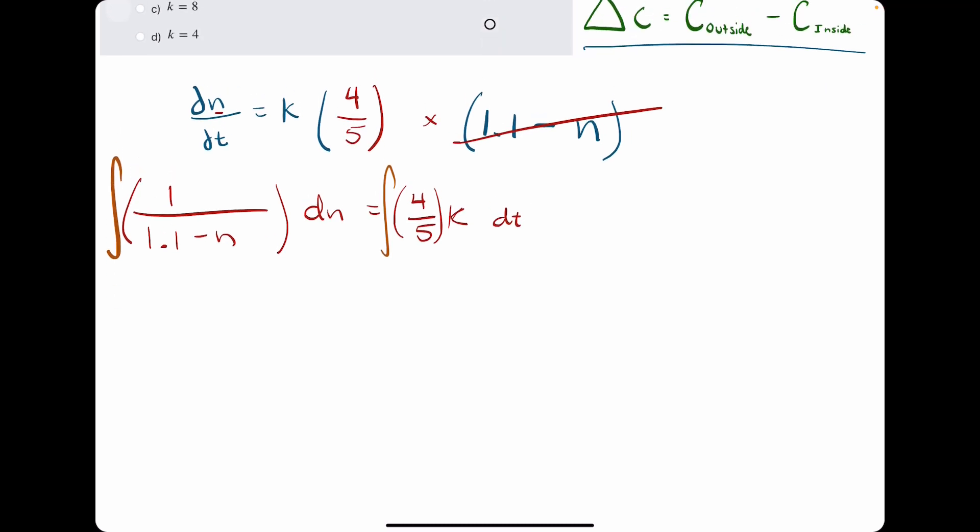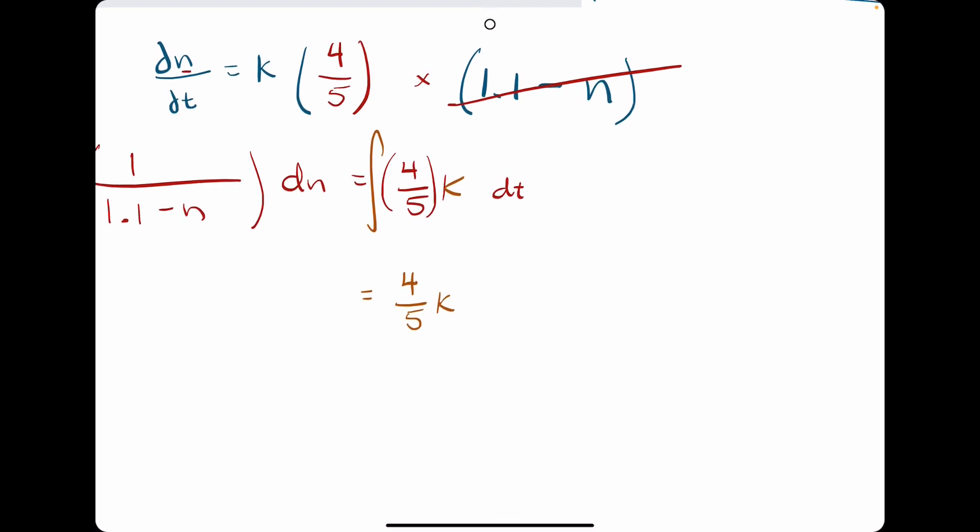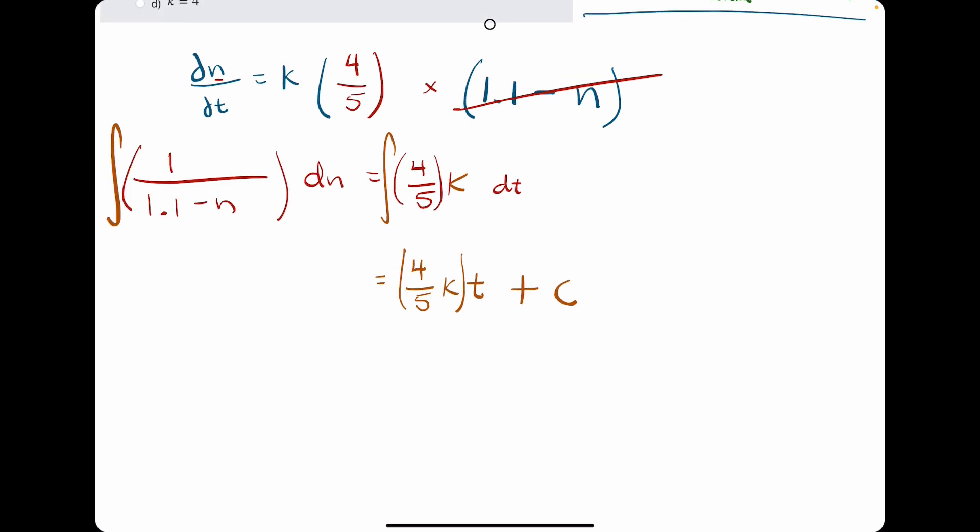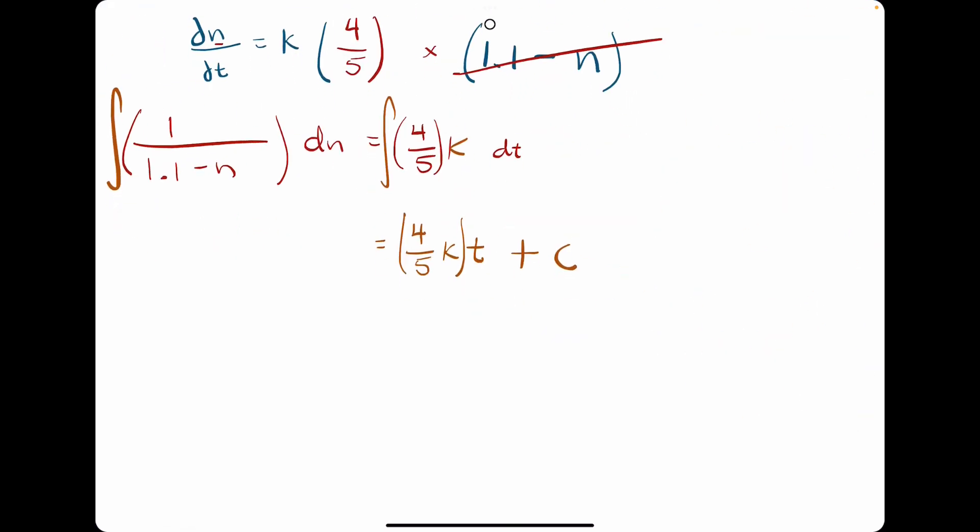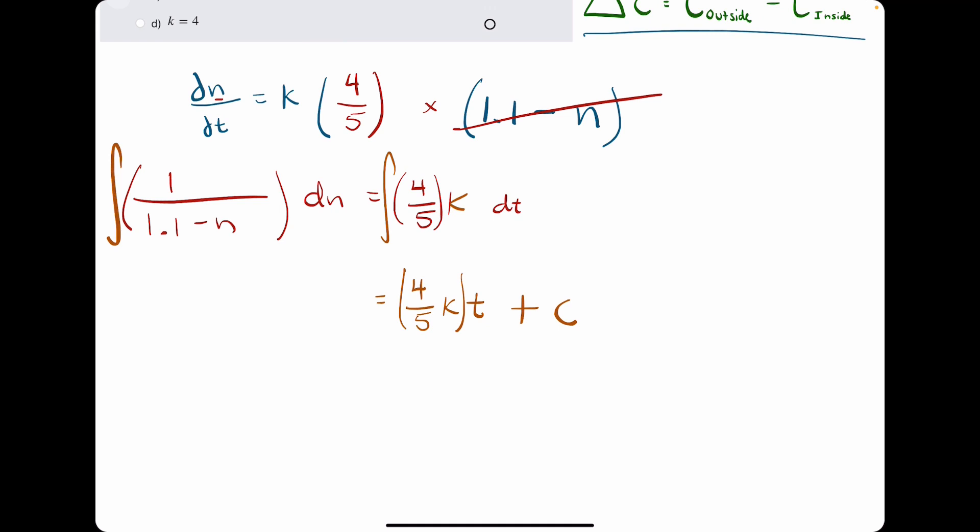Now, same process as always, we want to integrate both sides. Let's start with something more familiar. 4 over 5k is just a constant. So the integral of a constant is just that constant times t. We want to add our plus c on this side. Now let's talk about this side.